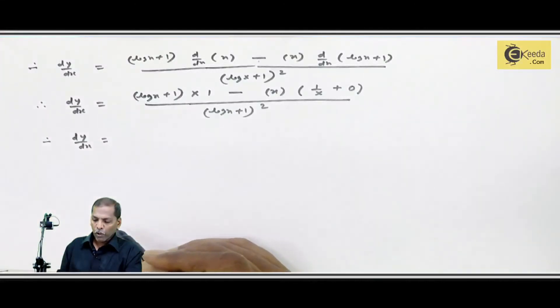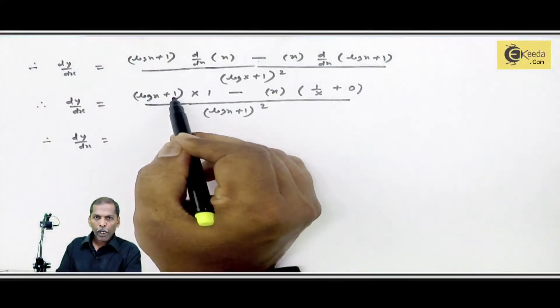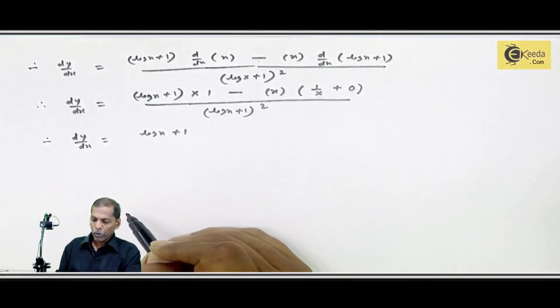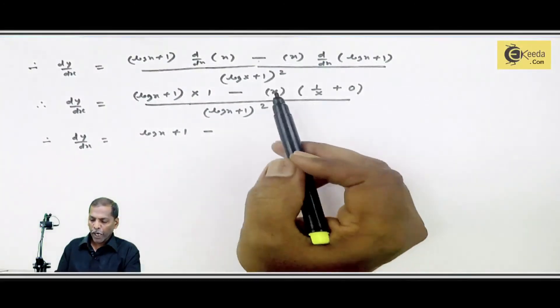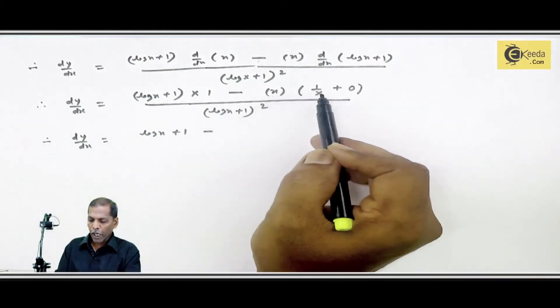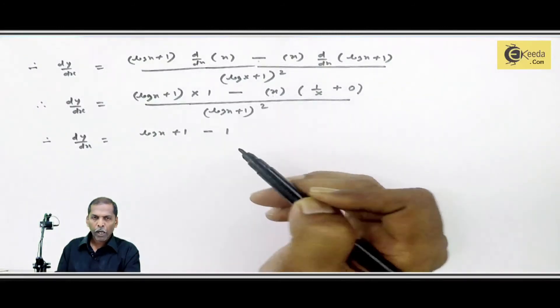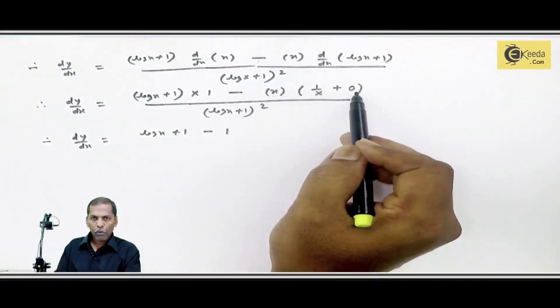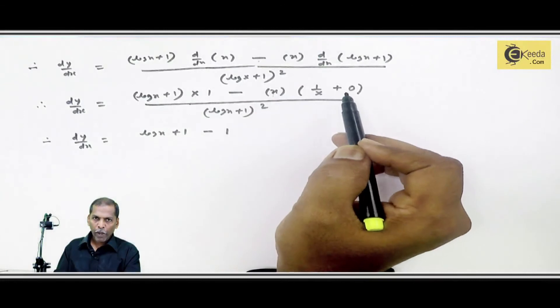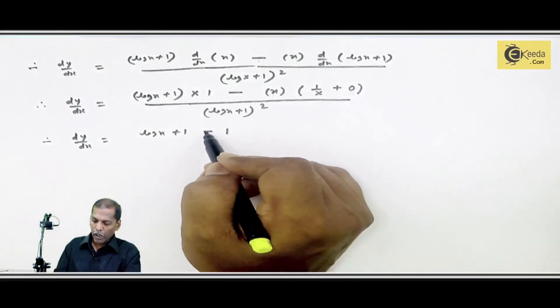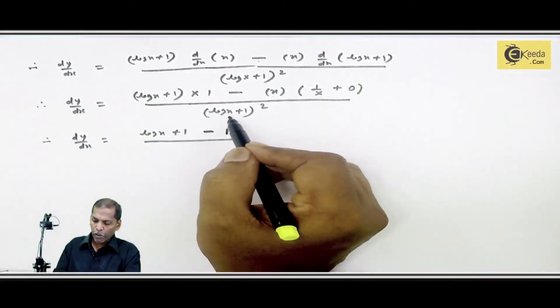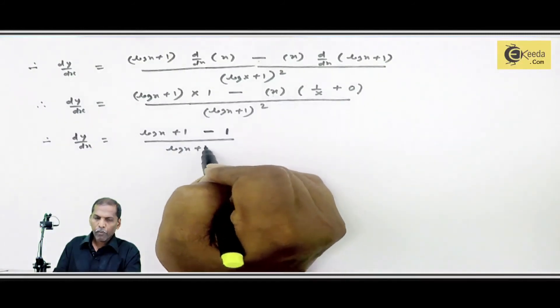Next step, dy by dx is equal to log x plus 1 multiply by 1, answer is log x plus 1. Then minus, x multiply the bracket, x into 1 by x, x cancel, answer is 1. Then x into 0, answer is zero. After multiplying x with bracket, total answer is minus 1, totally upon log x plus 1 the whole square.